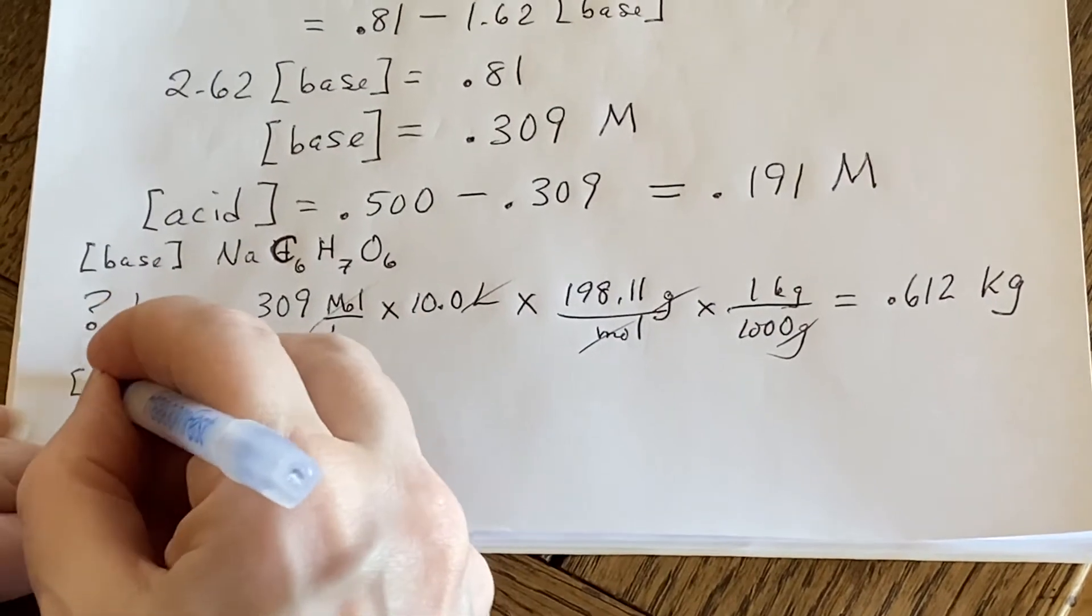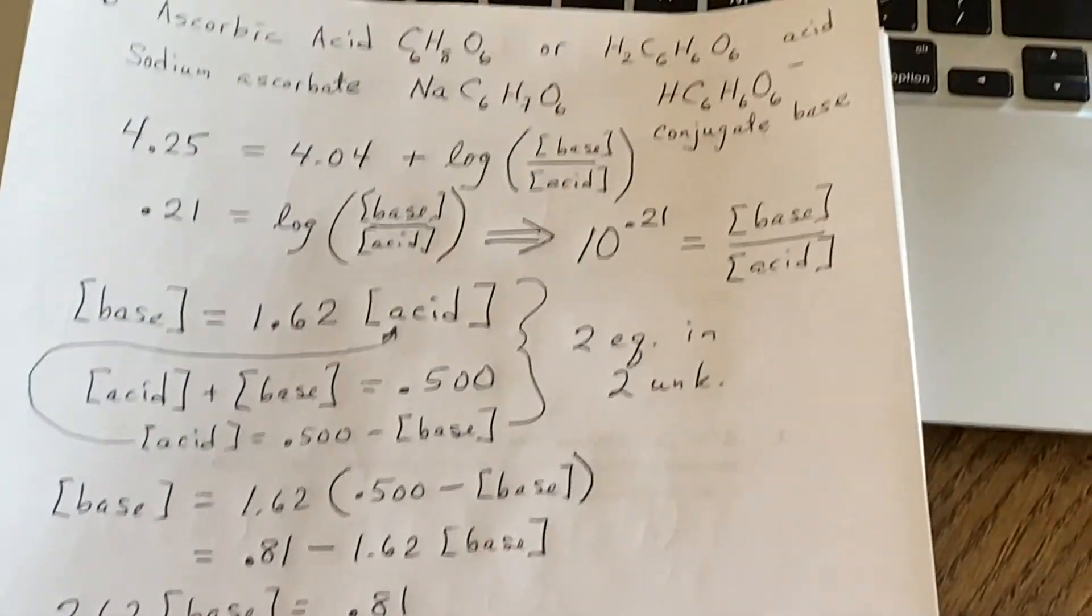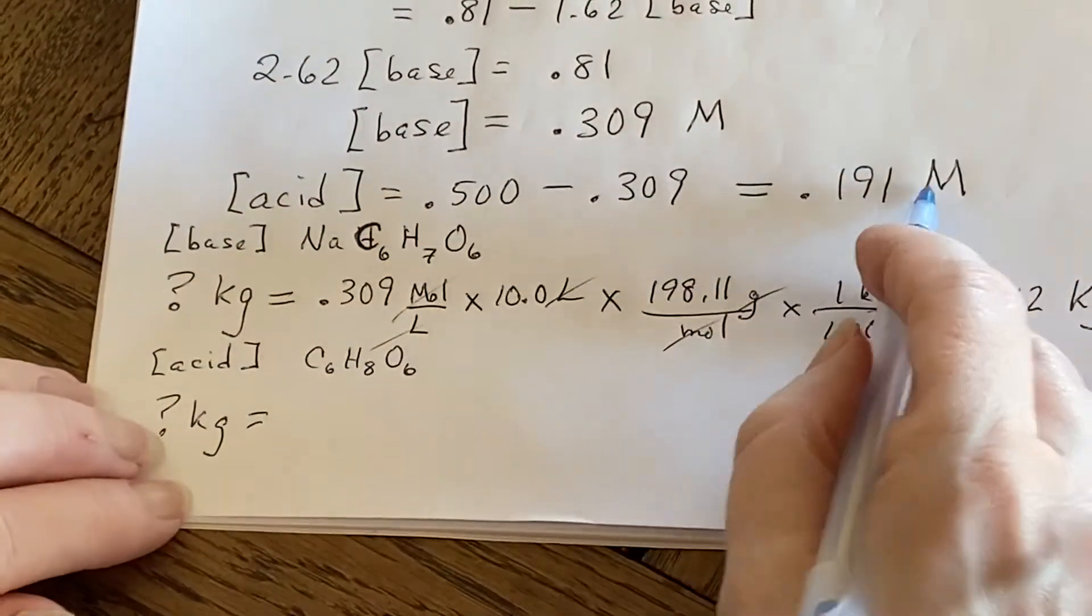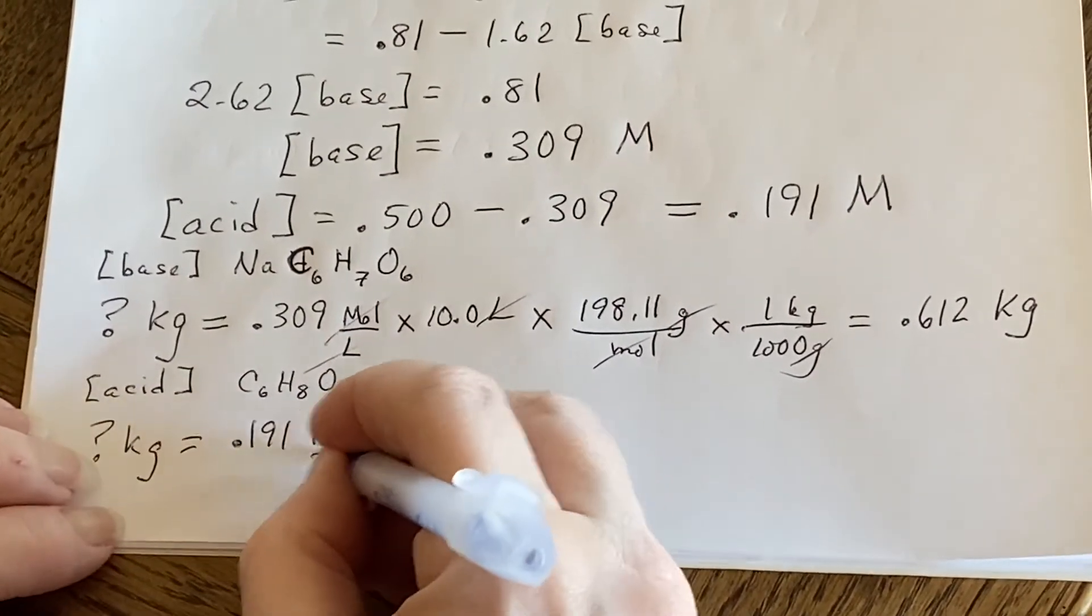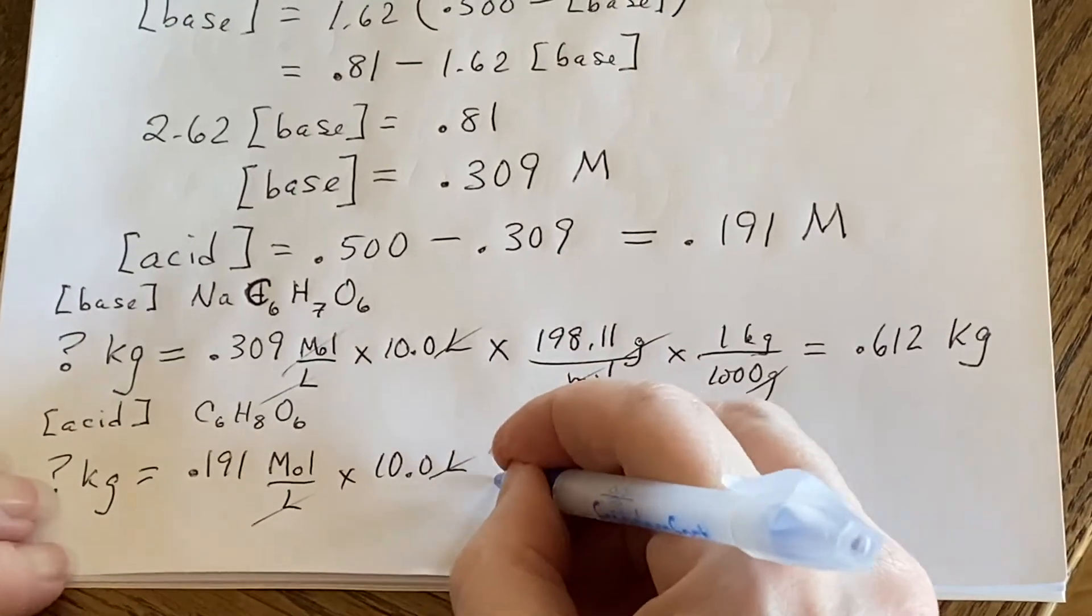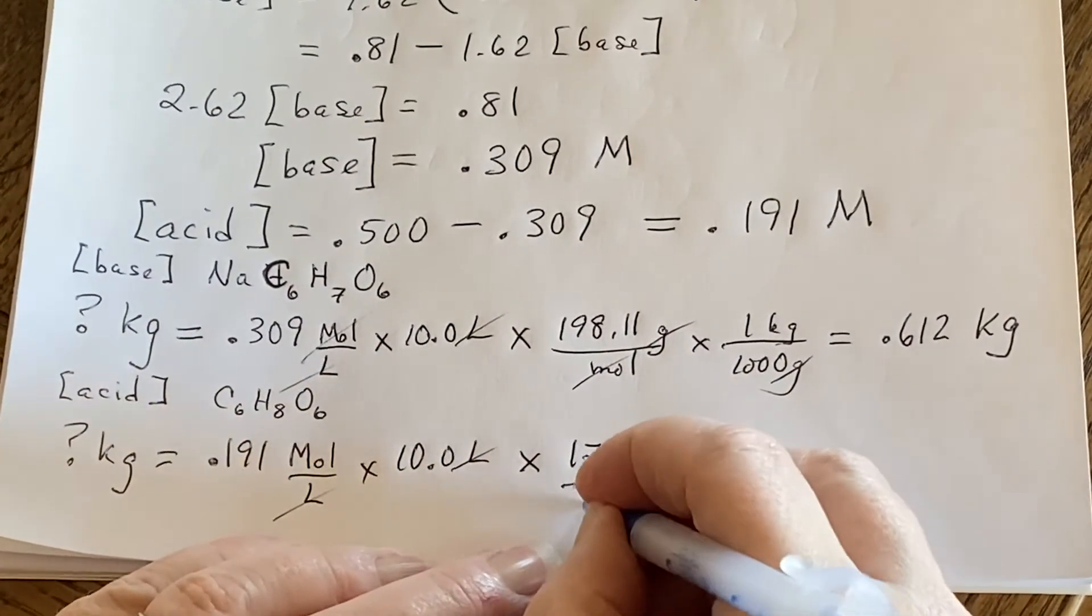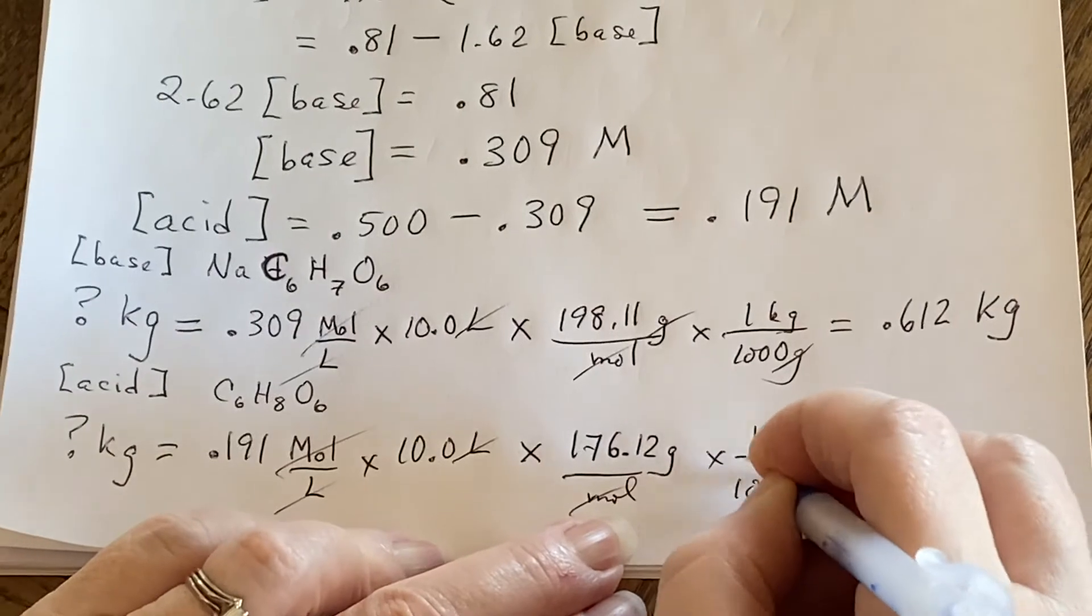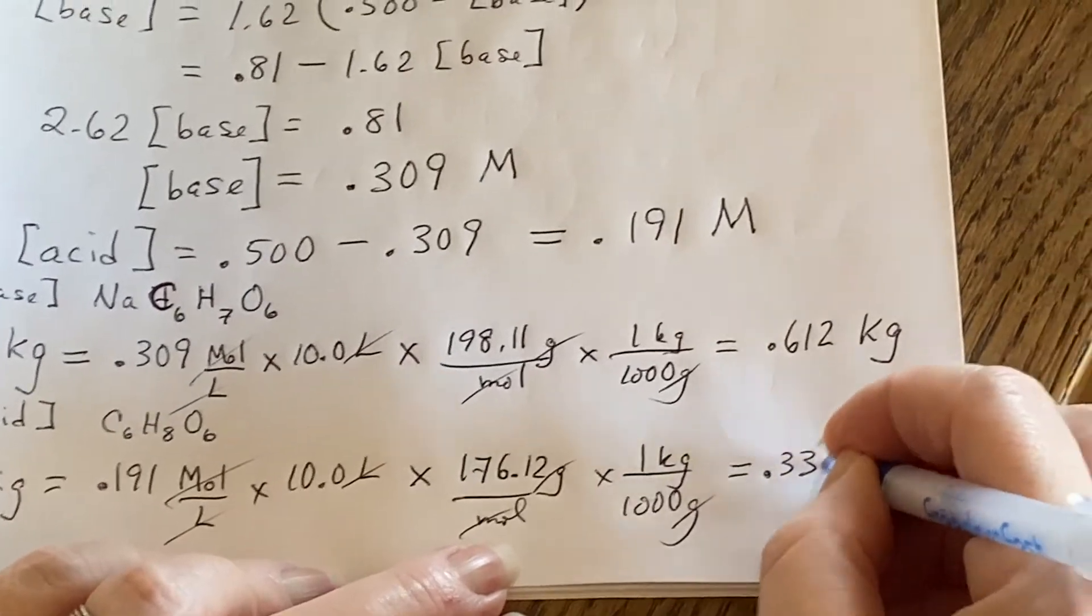If you do the same thing for the acid, which was the C6H8O6, you're asking number of kilograms. You're going to say how much acid was there? Concentration-wise, 0.191 molarity, which is moles per liter. Again, you're trying to make 10 liters of solution. And you go look up your molar mass, grams per mole. Now get rid of the moles. And the kilogram is a thousand grams. And boom, you have 0.336 kilograms.